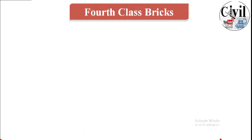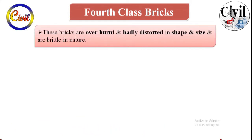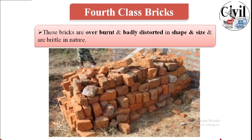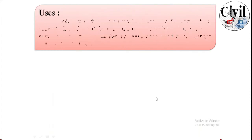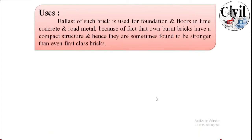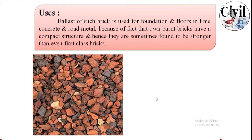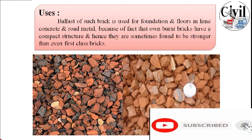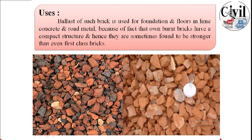Fourth class bricks are over-burned and badly distorted in shape and size, and are quite brittle in nature. They have very bad quality and are often used as ballast for foundations, floors in lime concrete, and road metals. Because of compact fractures from over-burning, they can sometimes be found stronger than first class bricks, as you can see in the picture.